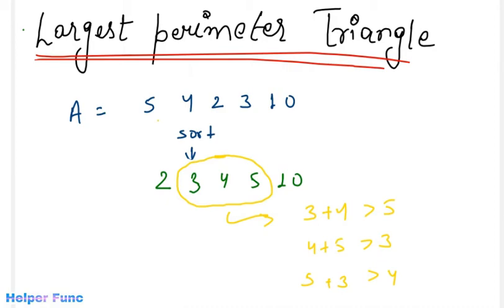and this triangle will have the largest perimeter that we can get among all these array elements. Why I am saying this? Because we are going from the right hand side, that is we are going from the largest elements. So if we go by this side, the perimeter will decrease. And because we have found a triangle here, this will be my largest perimeter triangle and I will return 12 as the perimeter.